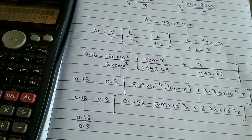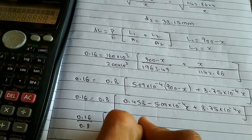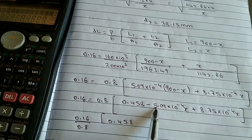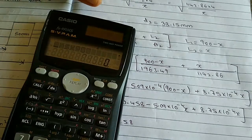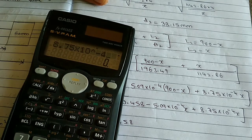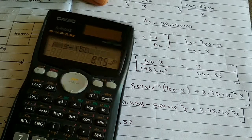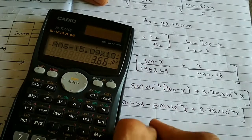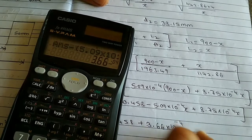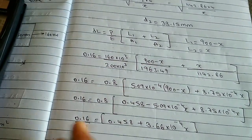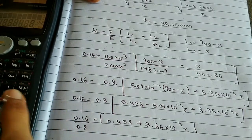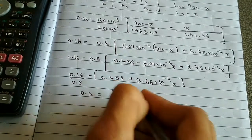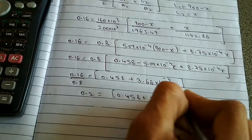Dividing both sides: 0.16 / 0.8 = 0.2. So 0.2 = 0.458 + (8.75 × 10⁻⁴ − 5.09 × 10⁻⁴) × x = 0.458 + 3.66 × 10⁻⁴ × x.